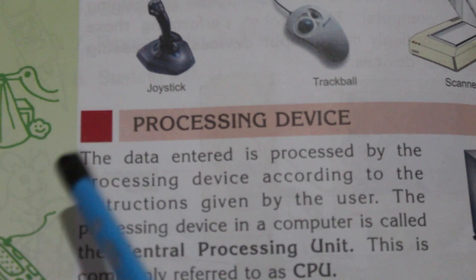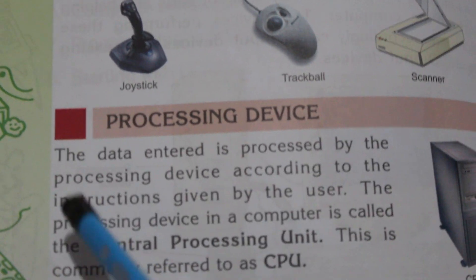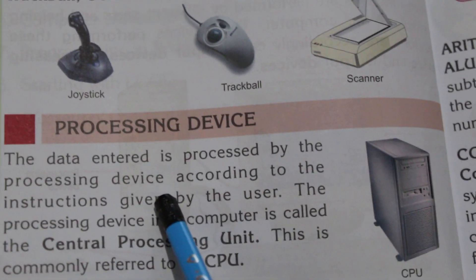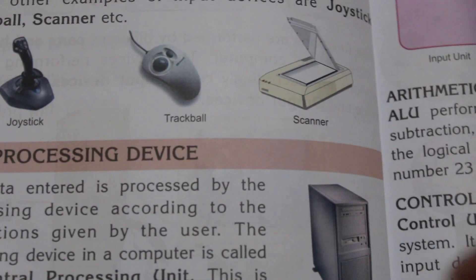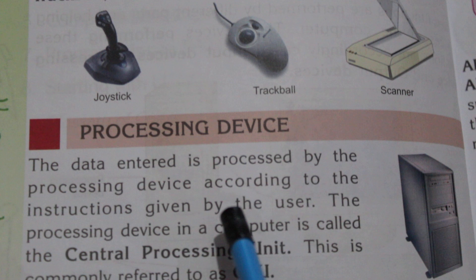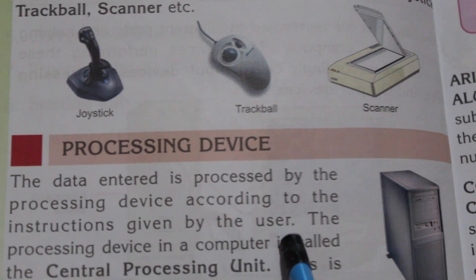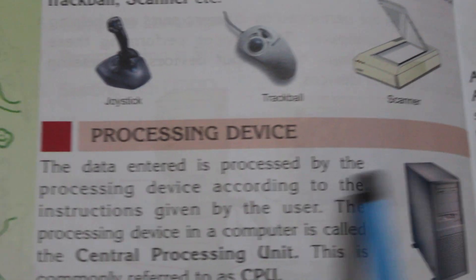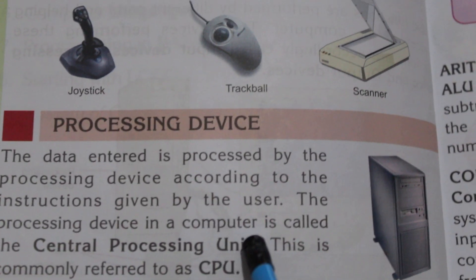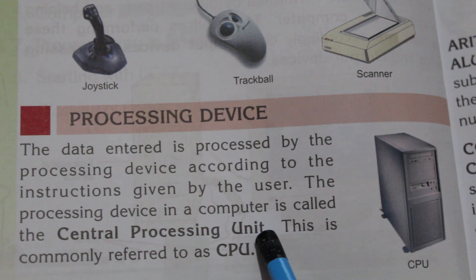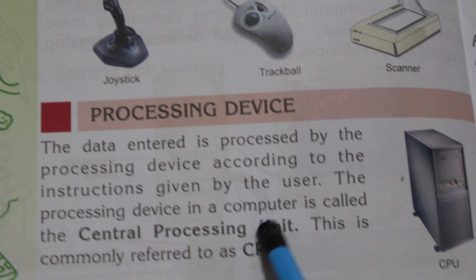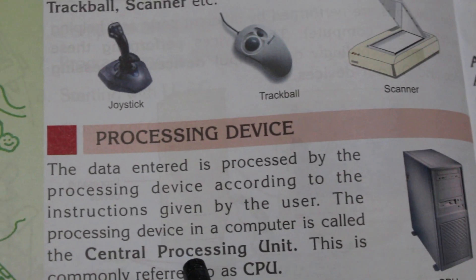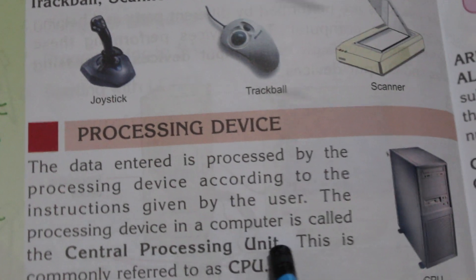Processing Device: The data entered is processed by the processing device. For example, I gave you 2 plus 2 as data and you processed it in your brain. The processing device in a computer, according to the instructions given by the user, is called the Central Processing Unit, commonly referred to as CPU. Students, you have to learn this full form.